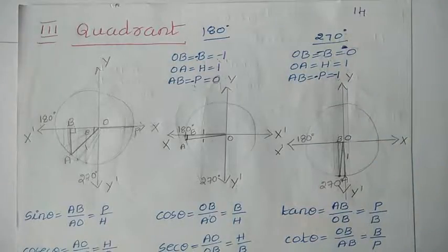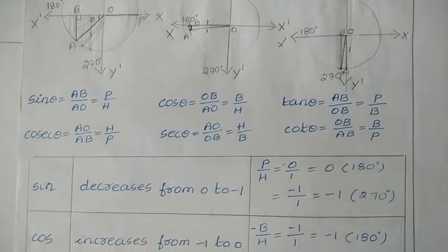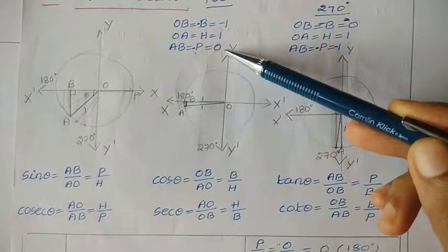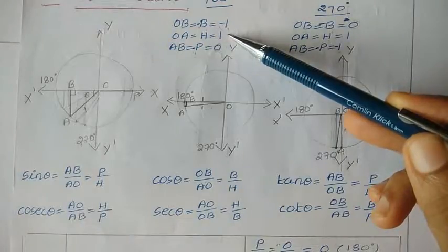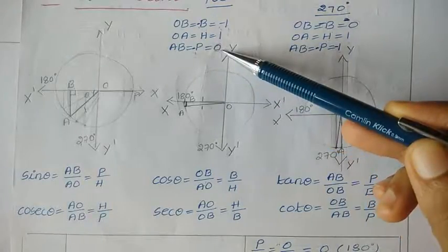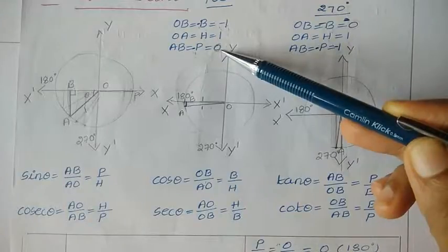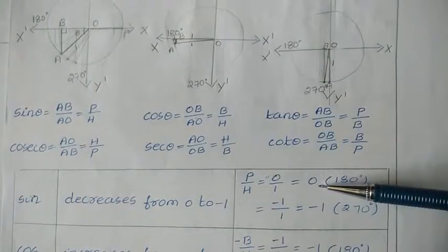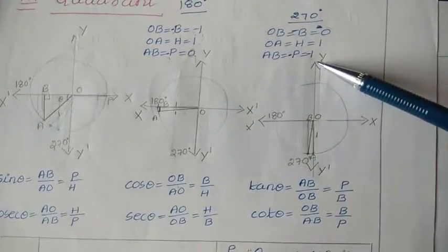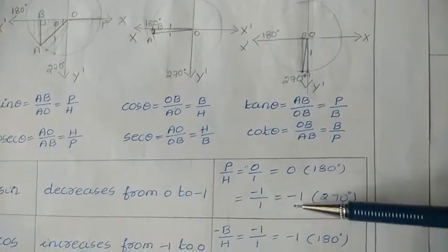Now we have the values of base, hypotenuse, and perpendicular. Let us see the trigonometric functions. First, sine means perpendicular upon hypotenuse. At 180 degrees, perpendicular is 0, so 0 upon 1 equals 0. Whenever we have 0, no need to consider the sign — just write 0. For 270 degrees, perpendicular is minus 1 upon hypotenuse 1, which equals minus 1. So sine value decreases from 0 to minus 1.